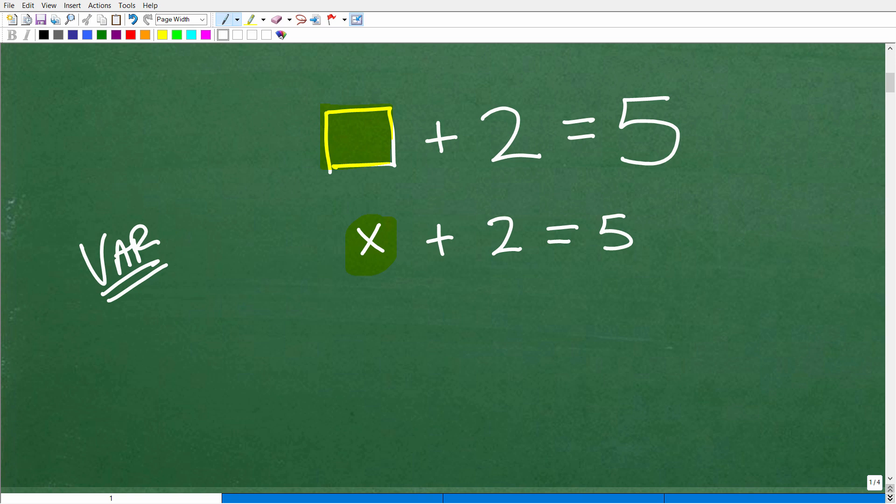So what is a variable? Put that definition in the comment section. But a variable is what? Well, it's a placeholder for a number. It represents a number, any number that you want it to represent.